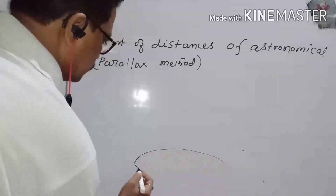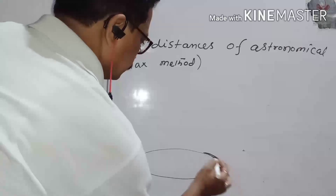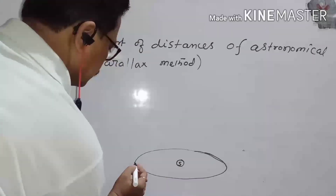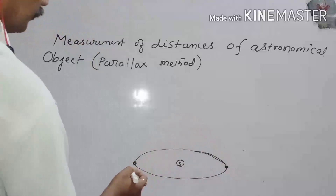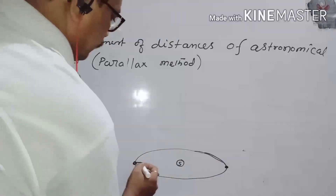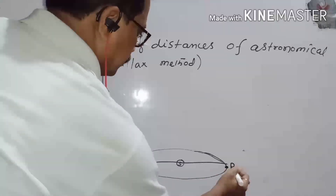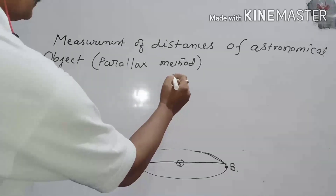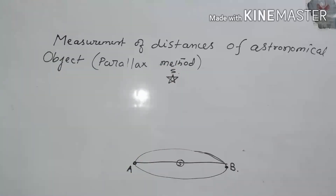Let us assume this is the orbit in which Earth is revolving around the Sun. Here is the Sun and this is the orbit of Earth. This diameter AB is taken as the baseline. Suppose this is the distant star S whose distance from Earth we have to measure.